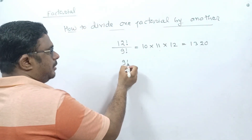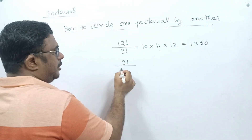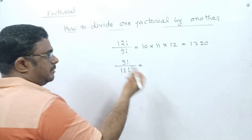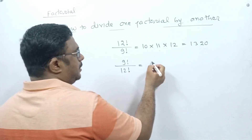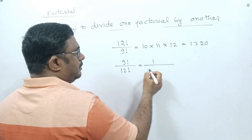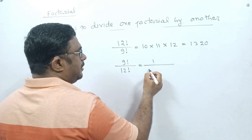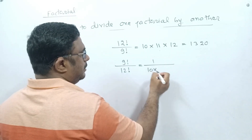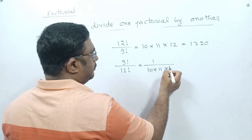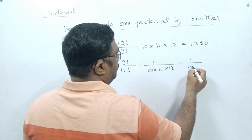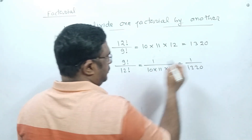If 9 factorial is in the numerator and 12 factorial is in the denominator, you do the same thing but the values are left in the denominator side: 10 × 11 × 12 in the denominator, giving 1/1320.